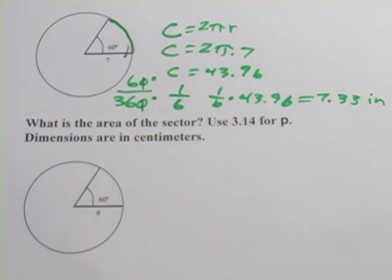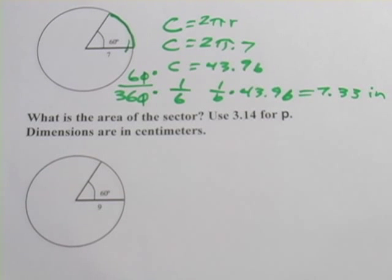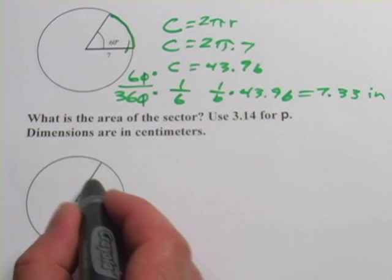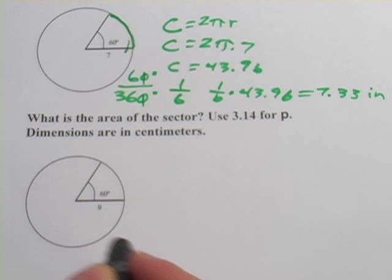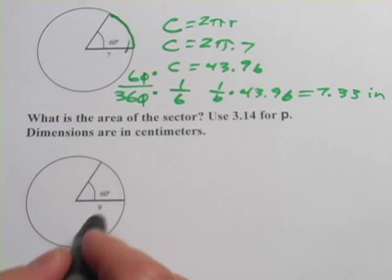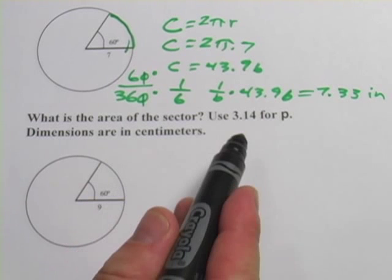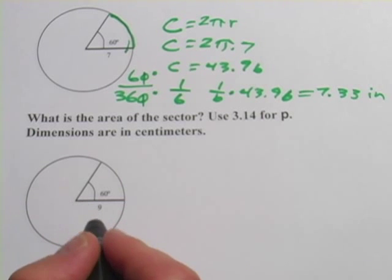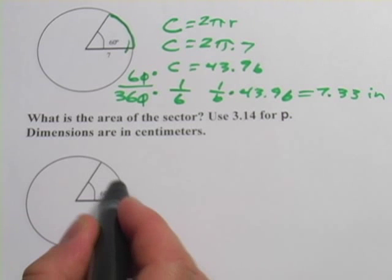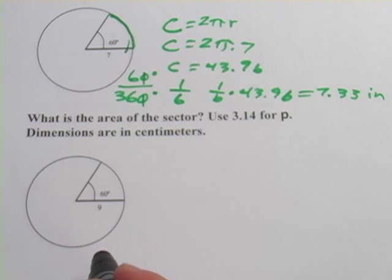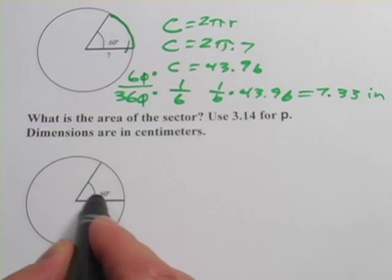All right, let's look at one more here. This one asks what's the area of the sector. And the sector is that whole wedge-shaped piece. So it's the area inside this wedge-shaped piece here. Dimensions are in centimeters, use 3.14 for pi, and they give us the radius again. Well, if we want to figure out what the area of this sector is, we need to figure out the area of the whole circle and what fraction of the circle this is.